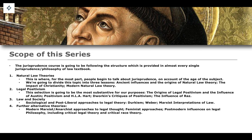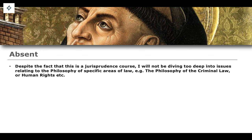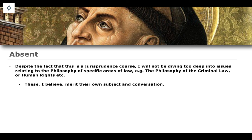This is the major structure of this series of lessons. I want to end on what is absent from this series. Despite the fact that this is a jurisprudence course, we are not going to be diving too deep into the philosophy of specific areas of law — for example, the philosophy of human rights or the philosophy of criminal law. This is not because they're not important, but because I believe they merit their own separate series of lessons as they are far more detailed and interesting. Potentially, after we've studied this general jurisprudence course, we might dive into the philosophy of human rights law and build upon what we've learned here.